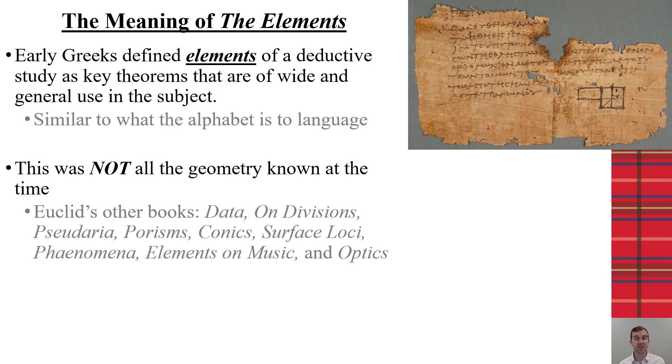Now, it is important to recognize that this was not all of the known geometry of this time. Even in this time period, Euclid is known to have wrote many different books, both in geometry and in other algebraic concepts. So, just because there's 13 books and there's over 400 propositions, this is only a fraction or a portion of what was known by the Greeks of this time.